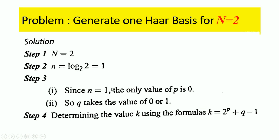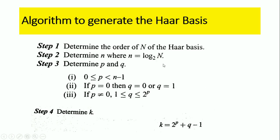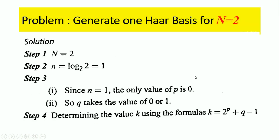Since n equals 1, the value of p is only zero, because when n equals 1 the p value is 0. If n equals 2 then p could be 0 or 1, but here n equals 1 so p equals 0. When p equals 0, the q value may be either 0 or 1.